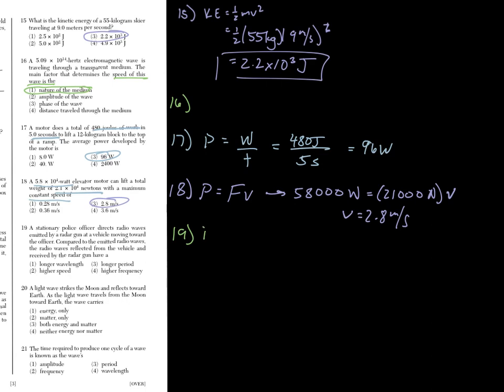Number 19. We should think Doppler effect because we have waves, moving waves, and basically changing in frequencies and wavelengths. So stationary police officer directs radio waves with a vehicle moving toward the officer. So we're comparing what happens when it's moving towards. So when you're moving towards the source or the observer, then the wavelengths compress. So wavelengths shorten and the frequency goes up. So you have higher frequency.